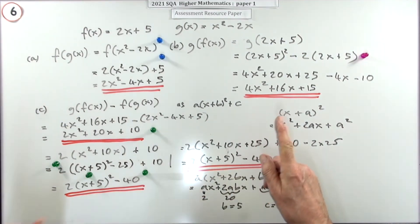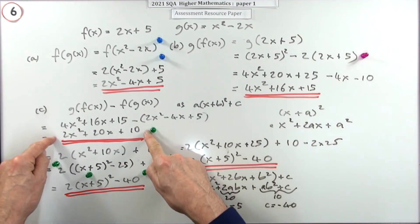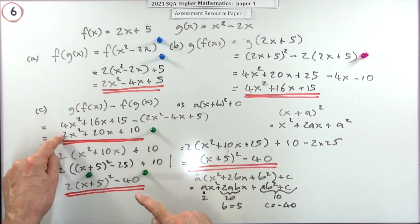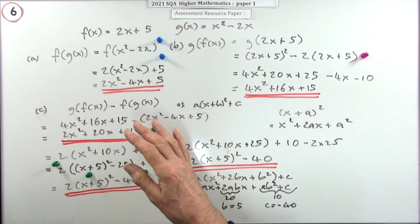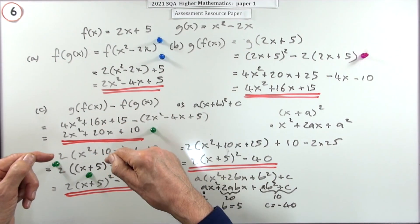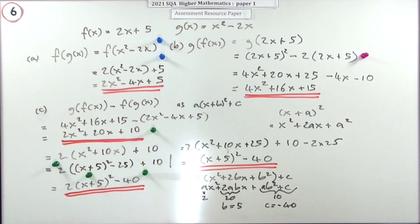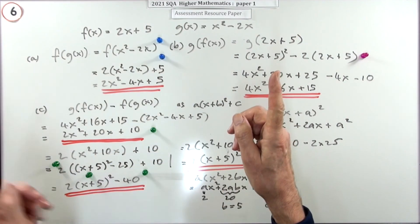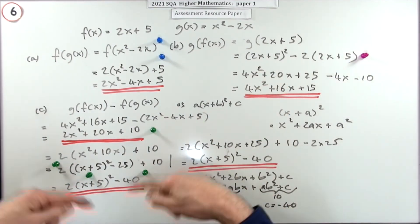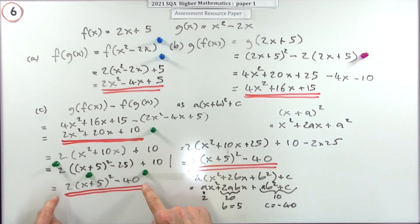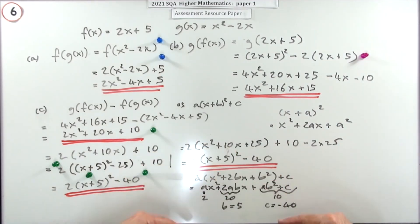There is also the case where you could do the whole thing in your head. You think: take out the 2, the 10 drops to a 5, so now I've got 2(x + 5)². Then 5 squared is 25, double it is 50, take it away, minus 40 — you could do it all in your head. You would get the marks if you demonstrated it was correct, but you'd have to multiply it all out, so it doesn't actually save you any time.